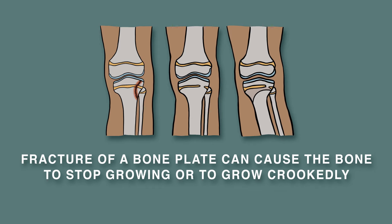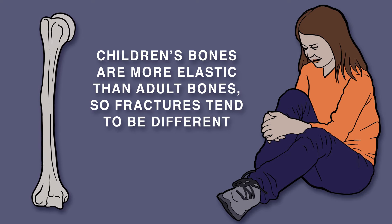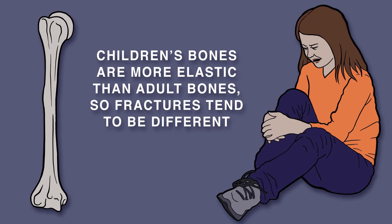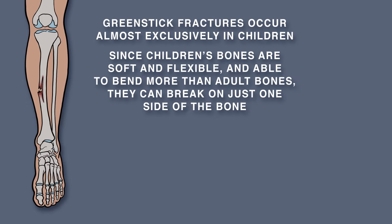Fracture of a growth plate can cause the bone to stop growing or to grow crookedly. Children's bones are also more elastic, so fractures tend to be different. A greenstick fracture occurs almost exclusively in children, because children's bones are soft and flexible, able to bend more than adult bone, so they can break on just one side of the bone.